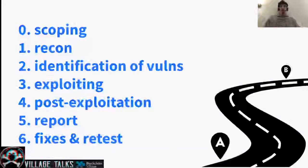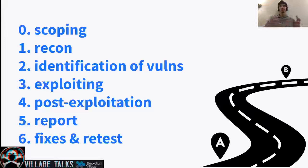These are the seven phases we will be talking about. First, scoping, then reconnaissance, identification of vulnerabilities, exploiting these vulnerabilities that we have found. What does it actually mean to do post-exploitation in the smart contract world? — we will be asking ourselves whether that's an actual thing or not. And then we'll briefly cover reporting, fixes, and retests. The idea of today is to see how these phases apply in the smart contract world, and whether we can start drawing some parallels between these phases and the ones you are used to applying.